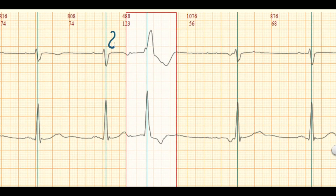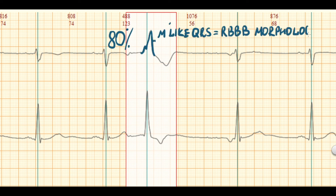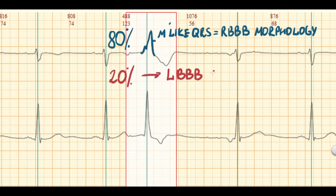The vast majority of aberrancy is represented as right bundle branch block morphology, but approximately 20% of cases have a left bundle branch block morphology.